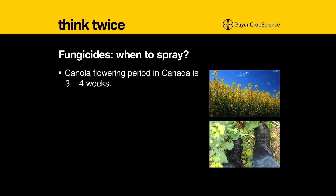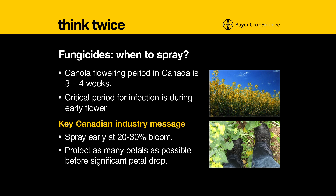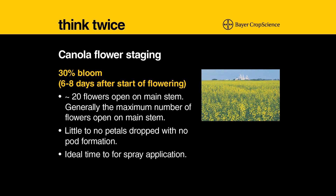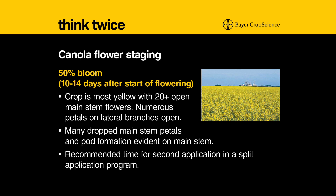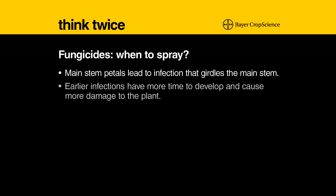The critical infection period — and this doesn't really change between our countries — is during that early flowering stage. A key Canadian industry message, whether from buyers, the government, or other companies, is to spray early. Our ideal time is the 20 to 30 percent bloom stage. You want to protect as many petals as possible before significant petal drop. Main stem petals are the ones that generally lead to infections that girdle the main stem, and the pods that develop on the main stem generally contribute the most to yield. Spraying early helps protect those main stem petals and reduces the prevalence of main stem infections. Also, earlier infections have more time to develop and subsequently cause more damage to the plant.